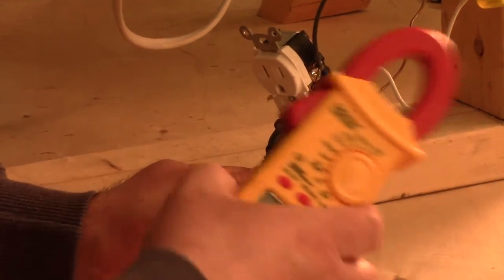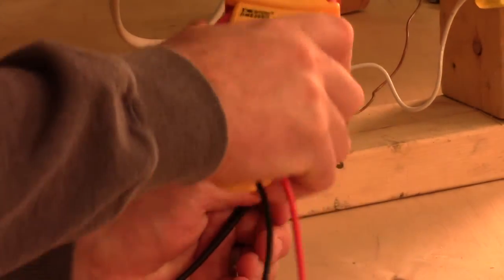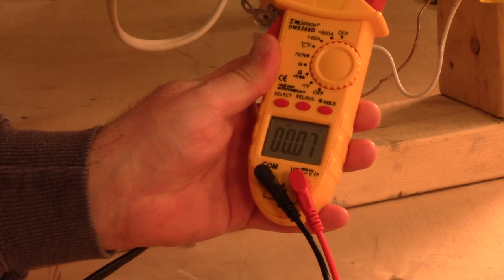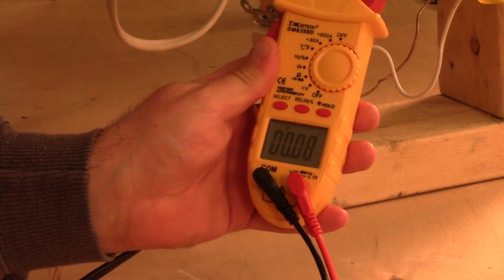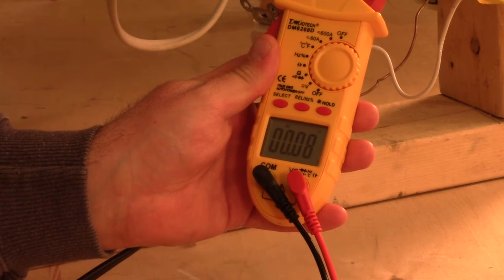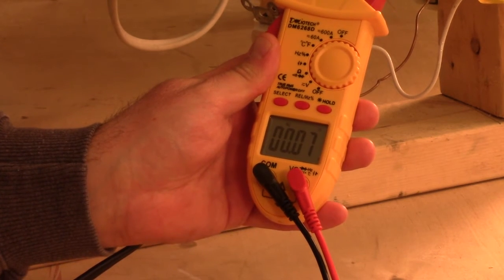Down here we have our outlet. I'm going to clamp around it. I've selected AC 60 amps, and as you can see, there's really nothing going on here. So now I'm going to turn on the heater.